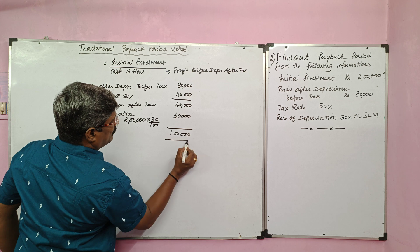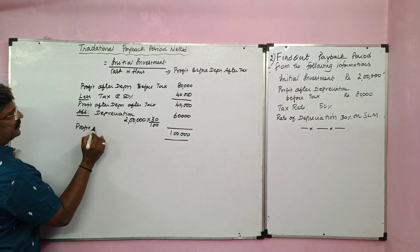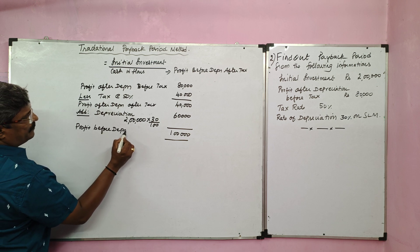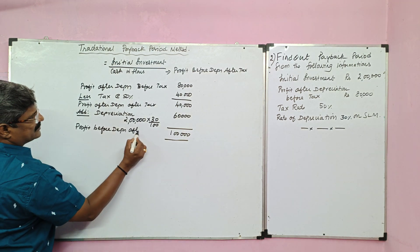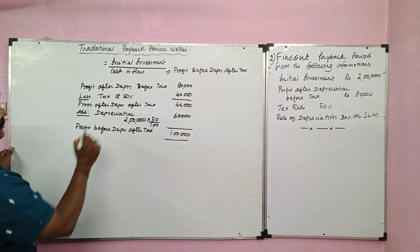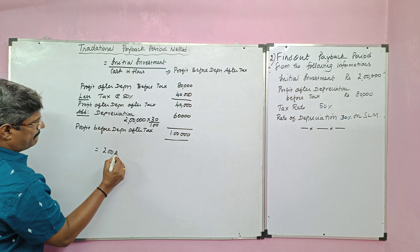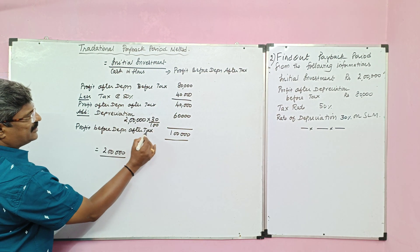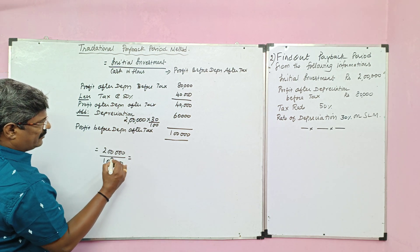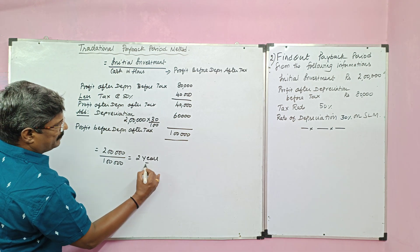We need profit before depreciation, after tax. Profit after depreciation after tax is 40,000, add back depreciation 60,000, so profit before depreciation after tax is 1 lakh. Initial investment 2 lakh divided by cash inflows 1 lakh = 2 years. So the payback period is 2 years.